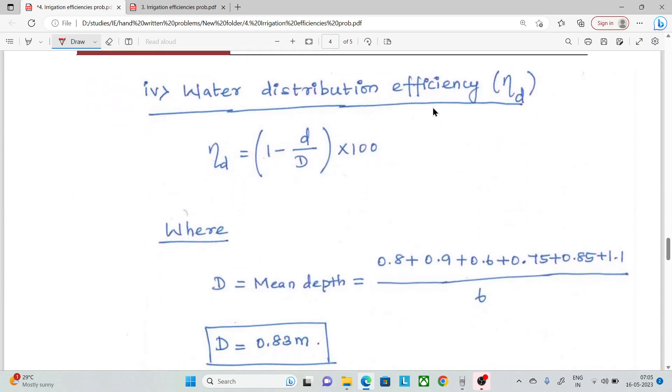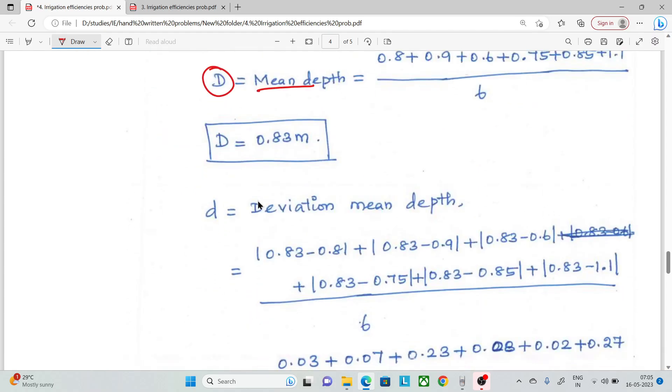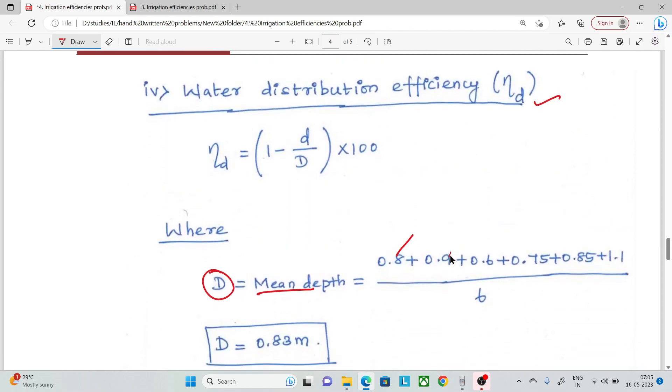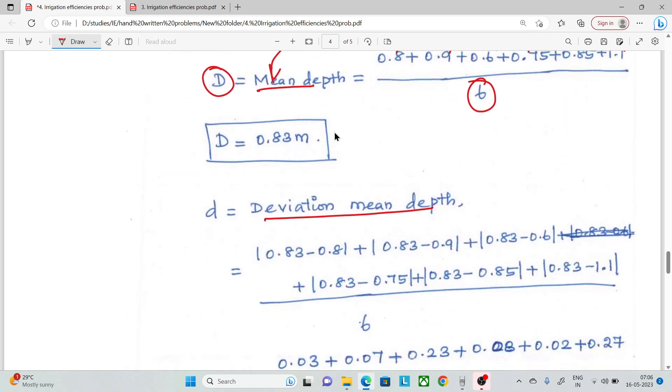Water distribution efficiency is 1 minus small d by capital D into 100. Capital D is mean depth. Small d is deviation from mean depth. If we calculate capital D, we check the penetration. If we add all values and divide by 6, that's the average. The mean is average. The average is 0.83 meters. Next is deviation from mean depth. This is actual mean depth.